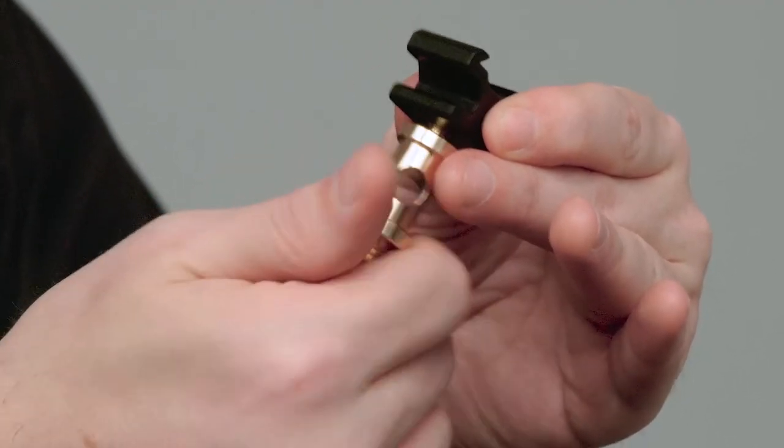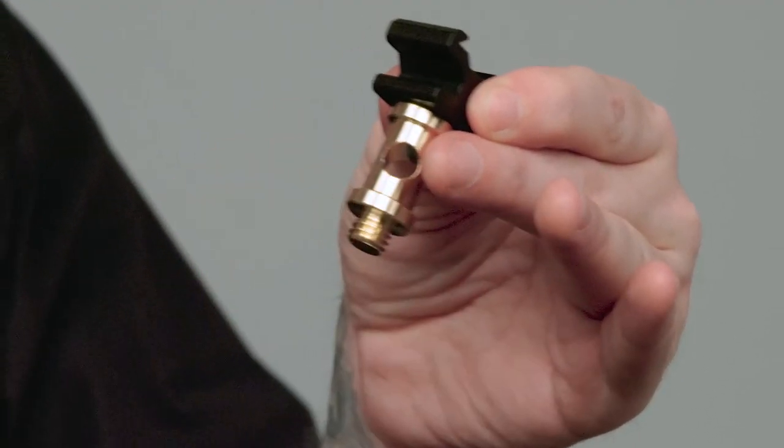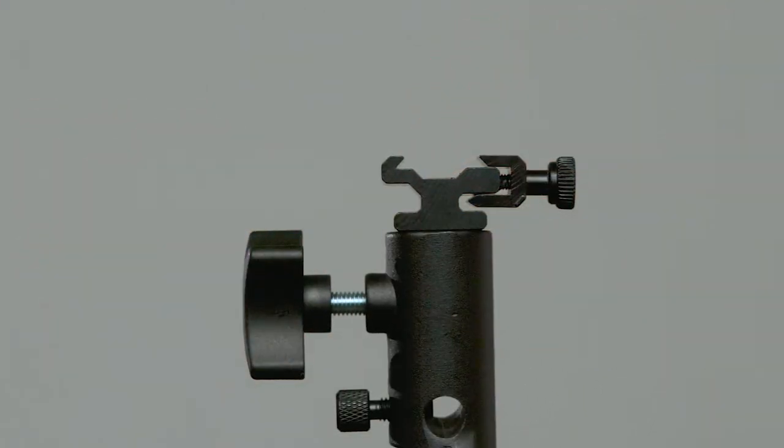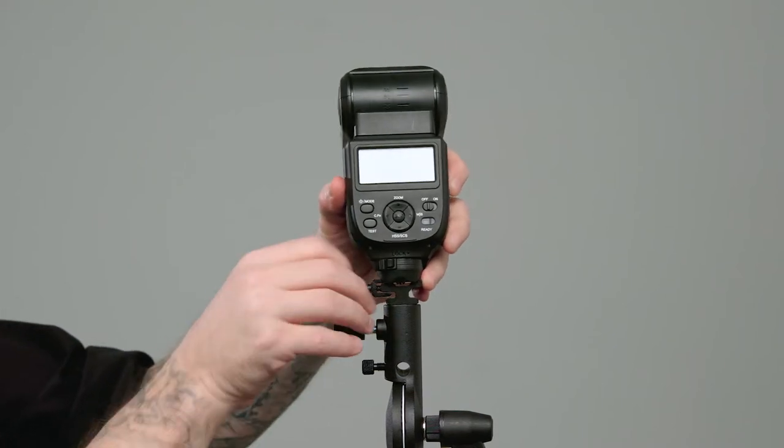Next, let's thread the hot shoe adapter onto the 1/4-20 thread of the double male stud. Now we can secure the hot shoe to the top baby receiver of the adapter. Mount the hot shoe of the speed light into the adapter.